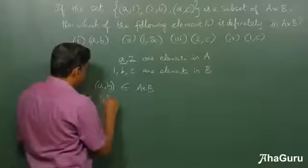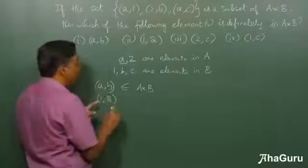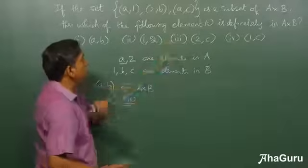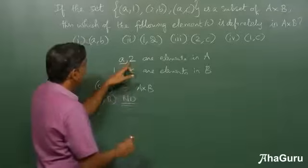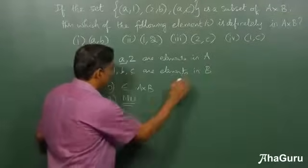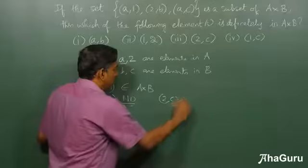Okay, similarly (2,c). Well, 2 is a first element in set A and c is an element in set B, so therefore (2,c) belongs to A×B.